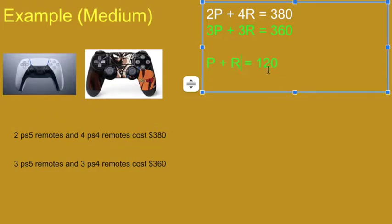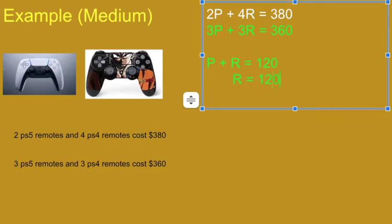And then I could, from there, I could either leave the R by itself or the P by itself. So let's say I want to leave R by itself. Then I have to subtract P from both sides. And now I've isolated a variable and can use it to substitute.